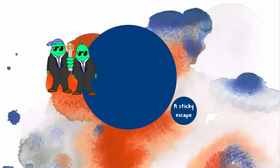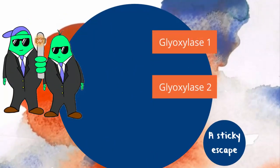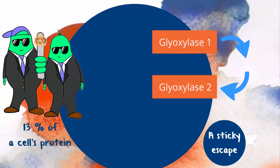Cells have a couple of enzymes that can take care of the methylglyoxal problem. The most important is a pair: Glyoxalase 1 and Glyoxalase 2, or GLO1 and GLO2 for short. These enzymes work sequentially to neutralize the methylglyoxal threat. To give you some idea of how seriously cells take this, glyoxalases make up 13% of the proteins inside a cell.